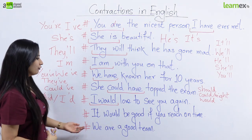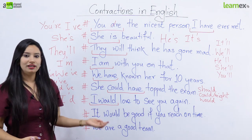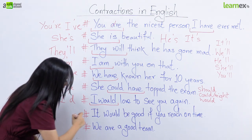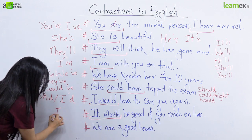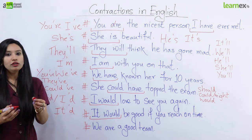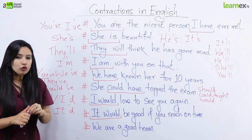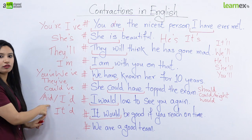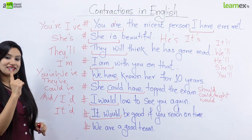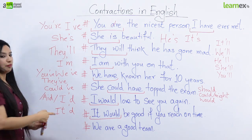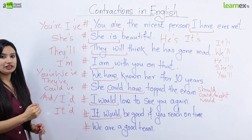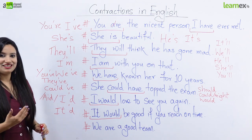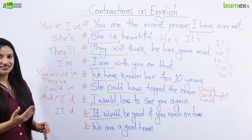Ab dekhte hain: 'It would be good if you reach on time.' Yeh isi ka ek example hai jaisa maine kaha, aap subject change karke aur contractions bana sakte hain. Isi tarike se yahan par bol sakte hain: it'd. Par yahan par notice karna zaroori hai ki dono contractions ki pronunciation mein thoda sa fark hai. Yahan par maine kaha I'd — aur beech mein koi break nahi daala, sirf ek sound mein bola: I'd. Par yahan par maine kaha it'd — yahan par ek halki si 'a' sound aayi beech mein. Merebaad boliye: it'd... I'd... it'd... I'd.